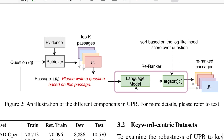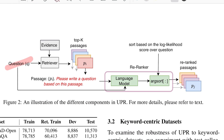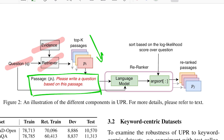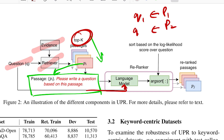Looking at the diagram: you have a question Q and all the documents — they call them evidence. You use a retriever (say BM25-based or sentence-transformers-based similarity) and get the top-k passages. Then you draft a prompt that looks like: 'Passage: [passage content]. Please write a question based on this passage.' You do this for all k retrieved passages, and this goes to the language model along with the original question.